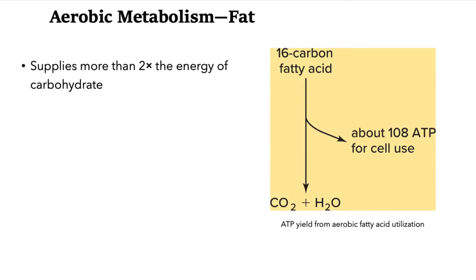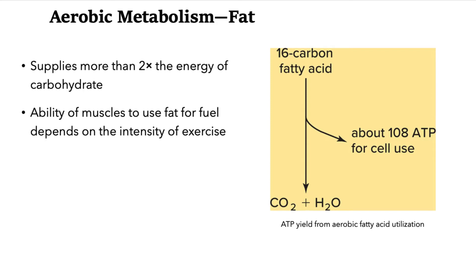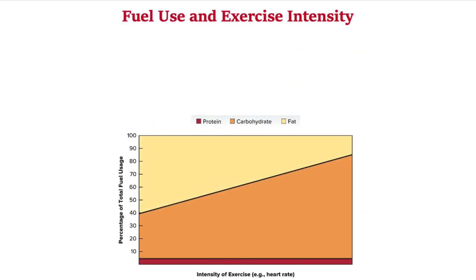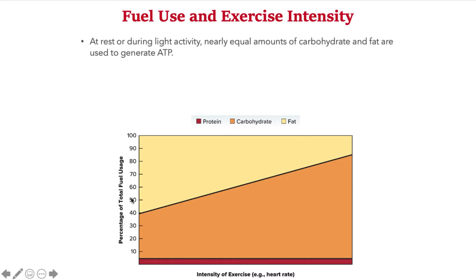Fat supplies more than two times — really about two and a half times — the energy of carbohydrates. The ability of our muscles to use fat for fuel is excellent, and it depends on the intensity of exercise. Looking at a chart with intensity of exercise on the bottom axis and percentage of total fuel from protein, carbohydrates, and fat — at rest or during very light activity, we use about a 50/50 ratio of carbohydrates and fat to generate ATP.